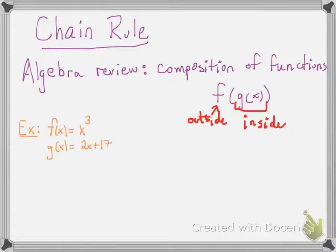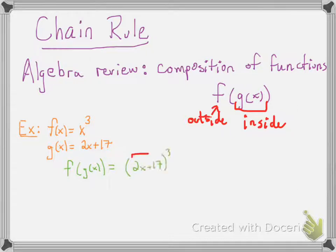Let's take a look at an example. f of x is x cubed and g of x is 2x plus 17. Let's figure out what f of g of x is. What you do is you take g of x — the 2x plus 17 — and plug it in for x in f. So it just becomes 2x plus 17, cubed.